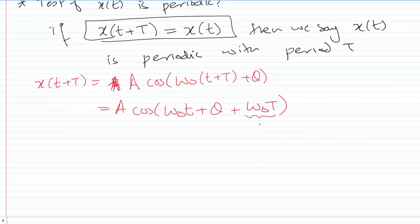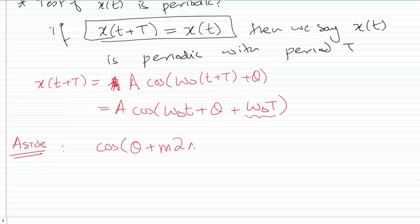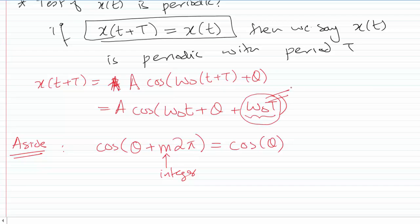To handle this, I'll use a key property: if you have A·cos(θ) and give it a shift of an integer multiple of 2π, it has no effect on the cosine waveform. So if ω₀T equals 2π, then A·cos(ω₀t + θ + 2π) = A·cos(ω₀t + θ), which is exactly x(t). That means x(t + T) = x(t), confirming periodicity.